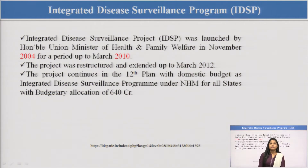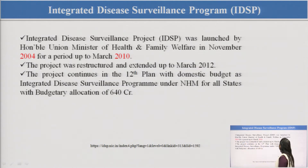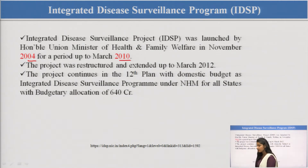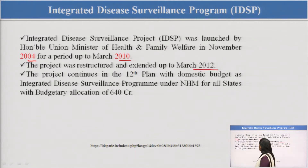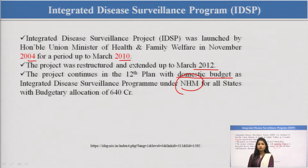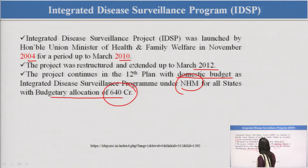Starting with the Integrated Disease Surveillance Program, this program was launched by the Union Minister of Health and Family Welfare in November 2004 for the period up to 2010. This project has been extended up to 2012. This project is for the domestic budget as IDSP under National Health Mission for all states under a budgetary allocation of nearly 640 crores.